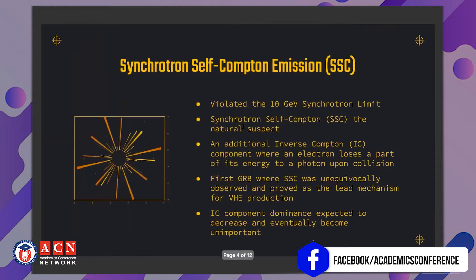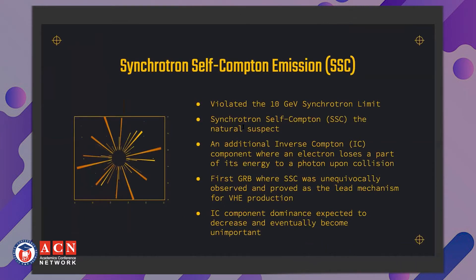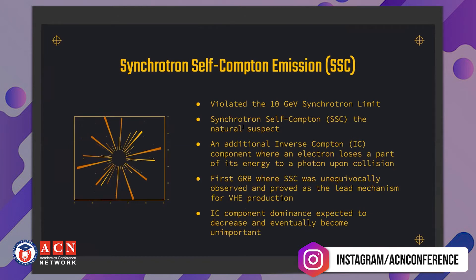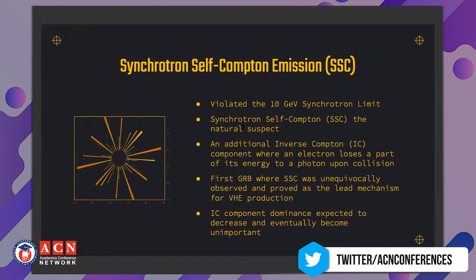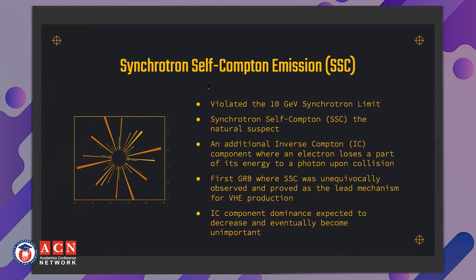This is the first GRB that significantly violated the 10 GeV synchrotron limit, which was the mechanism earlier used to explain the physics behind gamma-ray burst production. The expected theoretical answer to this violation is synchrotron self-Compton (SSC), which adds an inverse Compton component after the synchrotron component, under which an electron loses part of its energy to a photon upon collision. Since this was the first GRB where SSC was unequivocally observed and proved, prior studies showed that the dominance of the inverse Compton component is expected to decrease and eventually become unimportant with time.